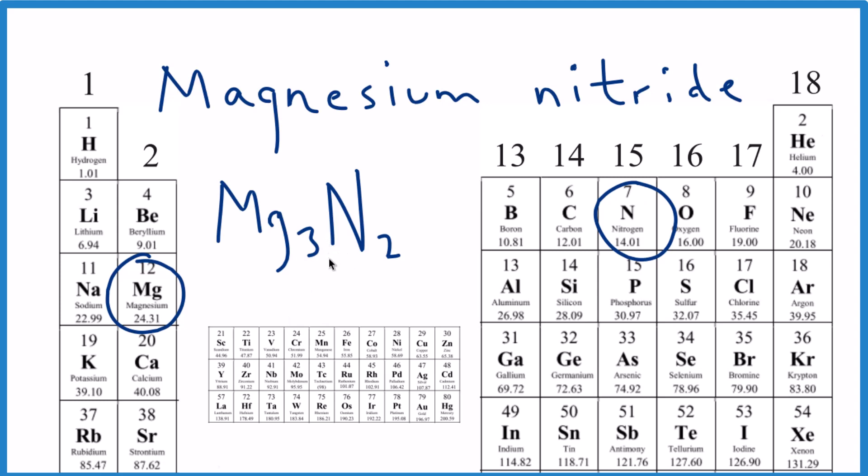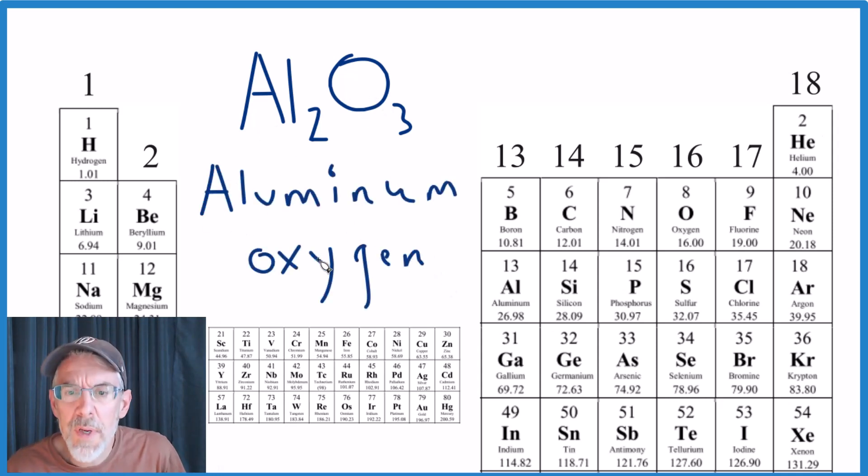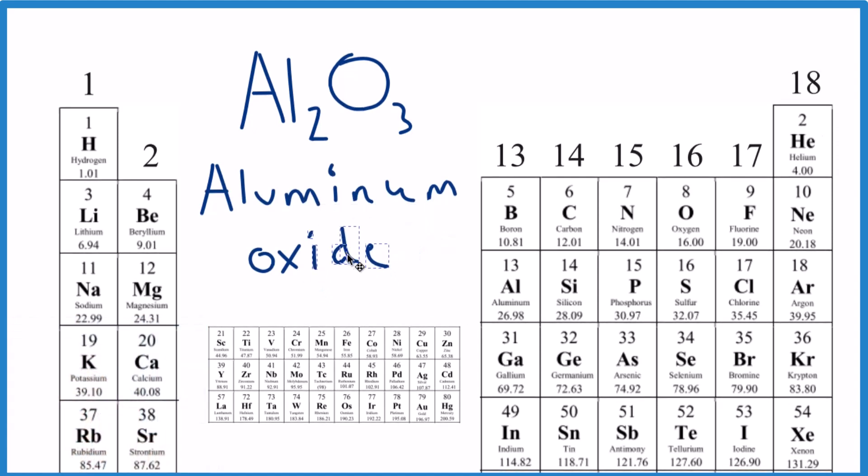What if you're given the formula and asked to write the name? Something like aluminum oxide. Well, aluminum's a metal, oxygen's a non-metal, so we know it's an ionic compound. All we really need to do is write the name aluminum and then oxygen, get rid of the ending and write in 'ide.' We just call it aluminum oxide.